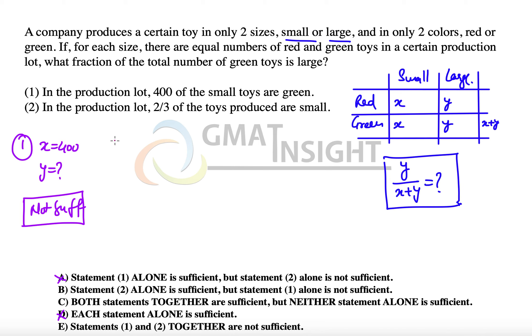The second statement says that in the production lot, two-thirds of the toys produced are small. So small is 2x, 2x is equal to two-thirds of the total toys, and the total toys will be 2x plus 2y.